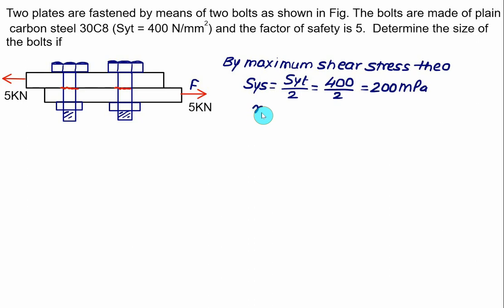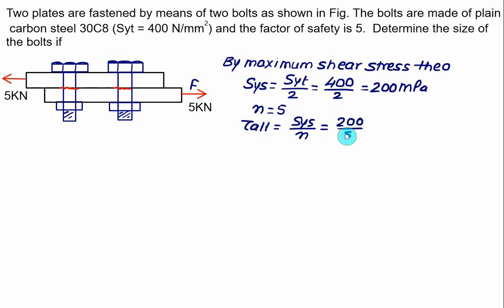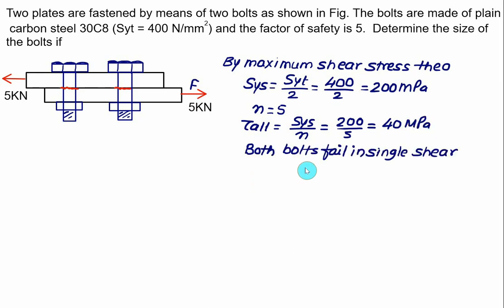Factor of safety N = 5. So allowable shear stress tau allowable = SYS / N = 200 / 5 = 40 MPa.